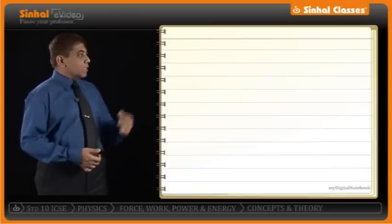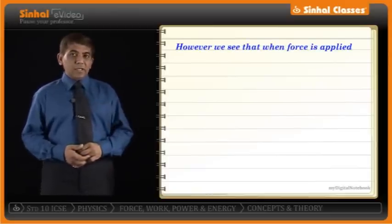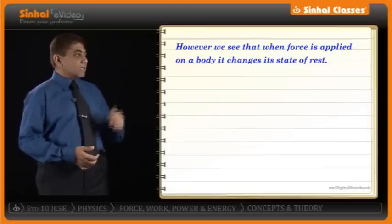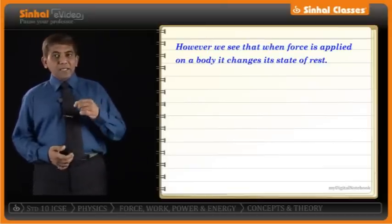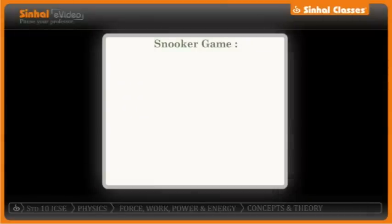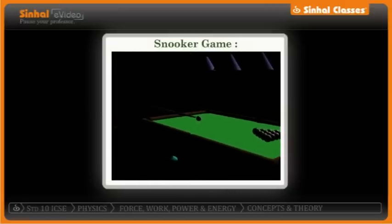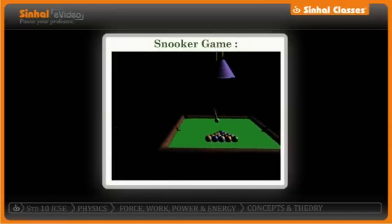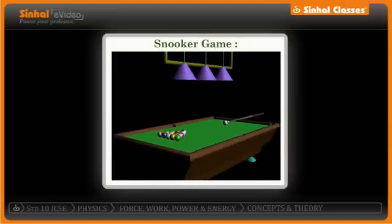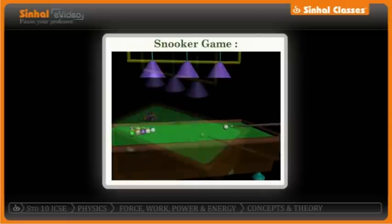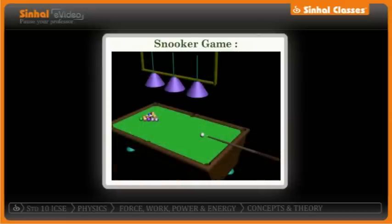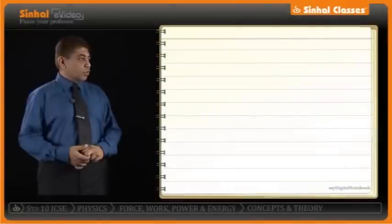When force is applied on a body, it changes its state of rest. For example, in a snooker game, when the stick hits the ball, the force applied by the snooker stick on the ball — which is at rest — makes it move forward, thereby bringing it into motion.